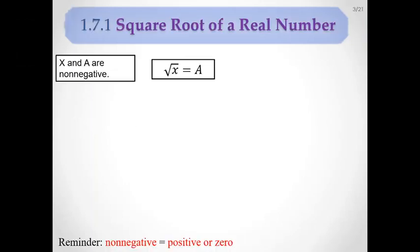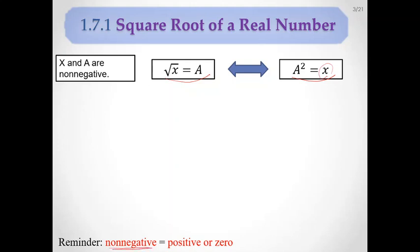Square root of a real number: the square root of x equals a means a squared is equal to x. Since the square of any real number is positive, x has to be non-negative — meaning positive or zero — and a is the same way.